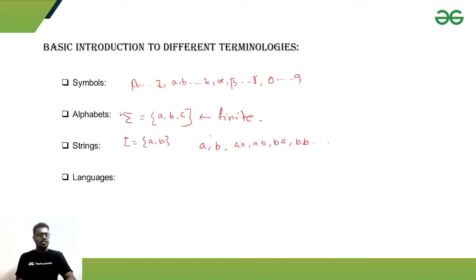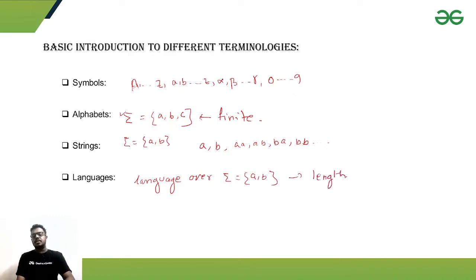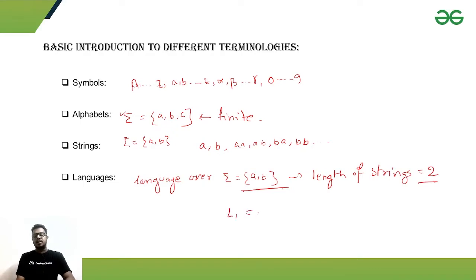A language is a set of strings. For example, suppose the alphabet set is {a, b} and the language contains all strings of length two. Then the language would be: {ab, aa, bb, ba} — a finite set of strings. This is a finite language.